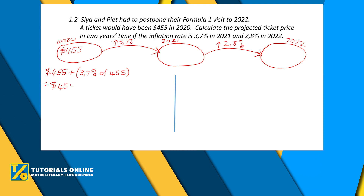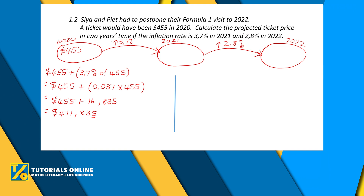Starting with 2020: the price was 455, and we add 3.7% of 455. You can write this as 455 plus 0.037 times 455. Calculating what's in the bracket gives 16.835. You must not round off in the middle of a sum. Adding these gives 471.835. Since the digit after the third decimal place rounds the third decimal up, the ticket price for 2021 is 471.84 dollars.